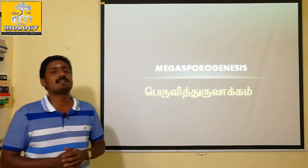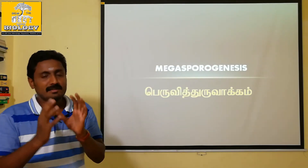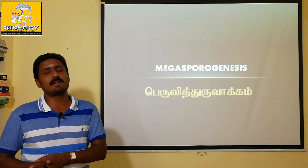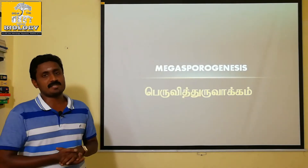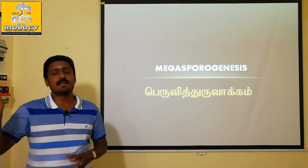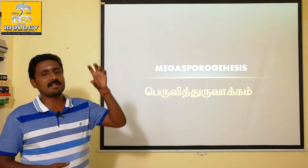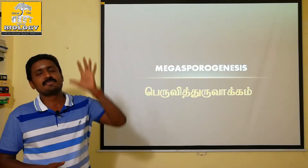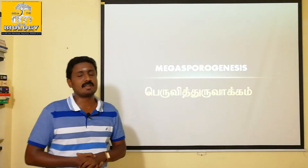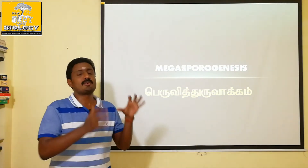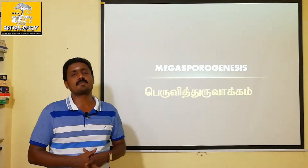The first process is Megasporogenesis — the formation of Megaspore. The second process is the development of the female gametophyte. For the male side, Microsporogenesis and male gametophyte development are covered in a separate video; the link is in the description.